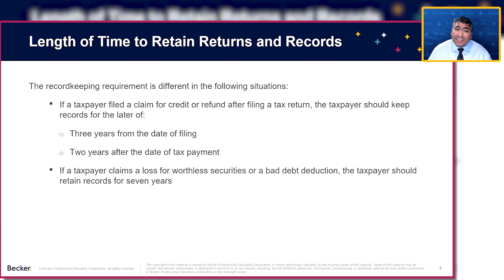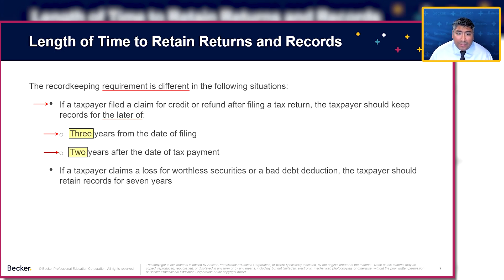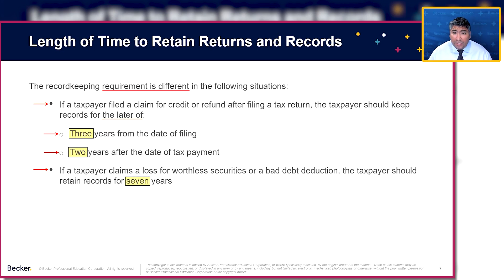The record requirement is different in certain situations. If a taxpayer filed a claim for credit or refund after filing a return, the taxpayer should keep records for the later of three years from the date of filing or two years after the date of payment — whichever is later is when that statute of limitations will lapse. Also keep in mind this could come up on your exam: if a taxpayer claims a loss of worthless securities or a bad debt deduction, the taxpayer should retain records for seven years. That is an exception to the general three-year rule.